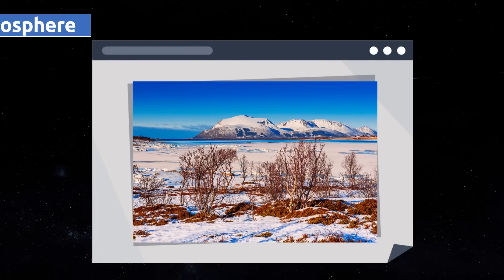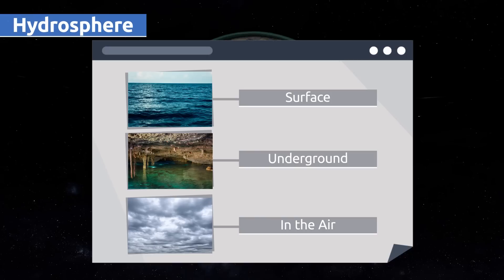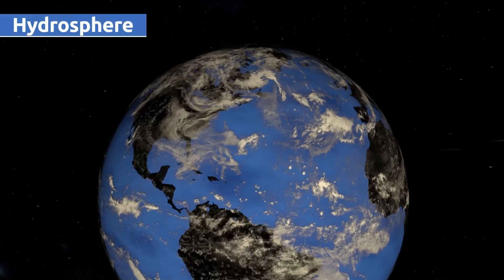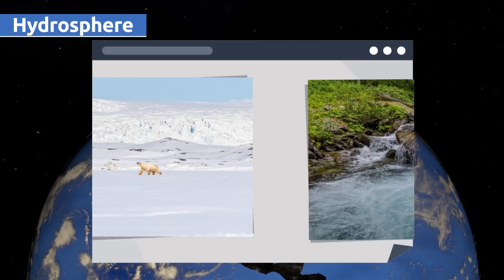The hydrosphere is made up of all of the water on the Earth's surface. This layer includes the water on the surface, underground, and in the air. Water in the hydrosphere exists in three states: solid, liquid, and gaseous.